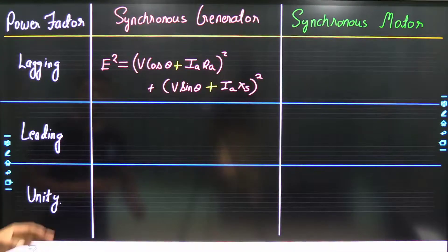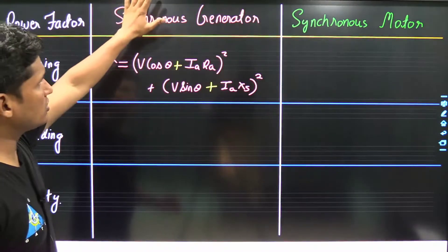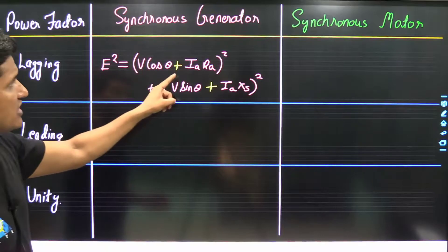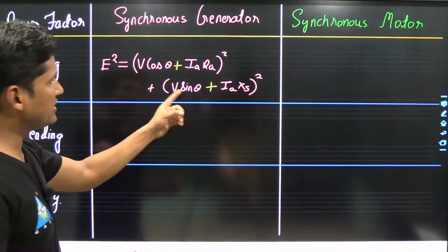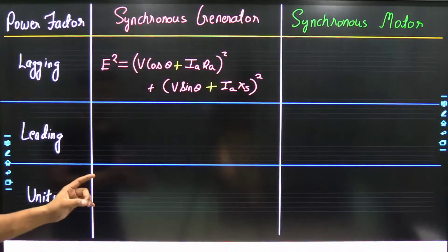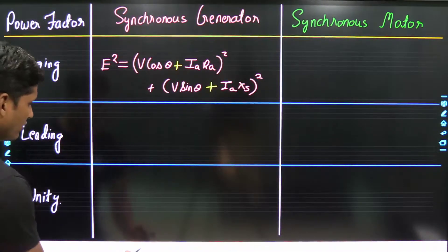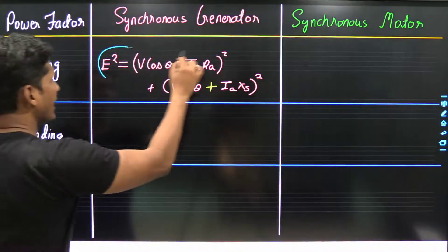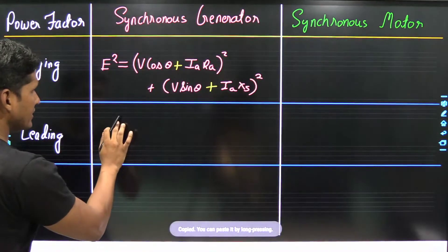For a lagging power factor synchronous generator, the formula is: E² = (V cos θ + I·Ra)² + (V sin θ + I·Xs)². When deriving the induced EMF for lagging power factor, you have to remember only this formula.